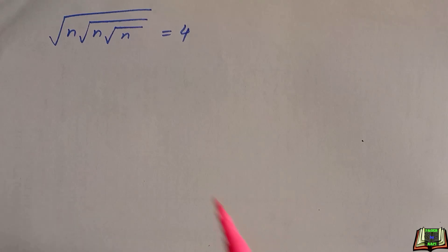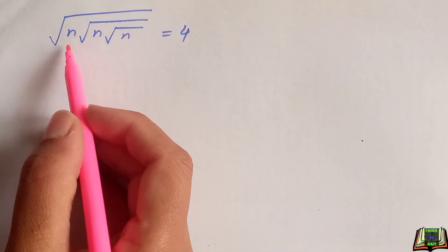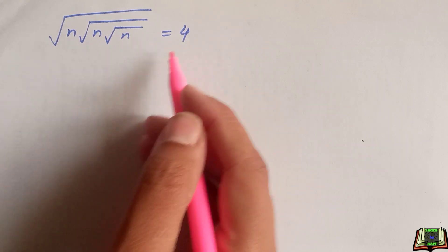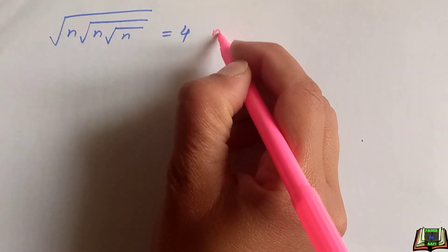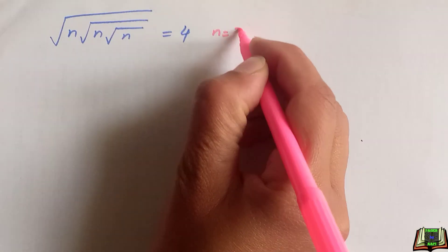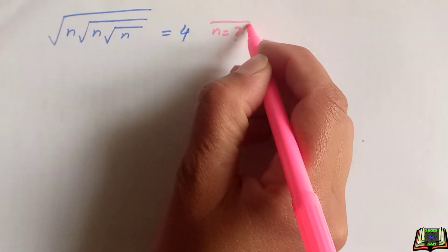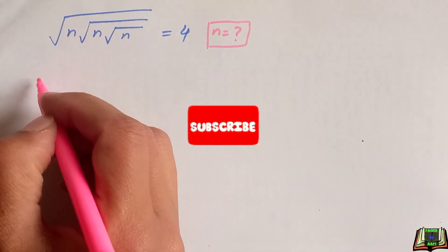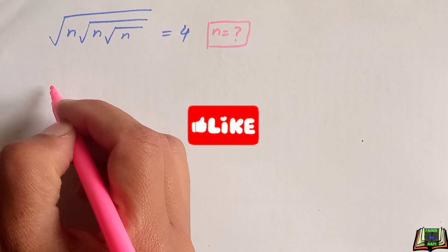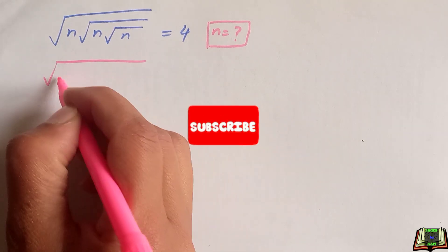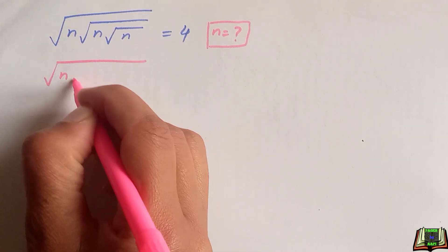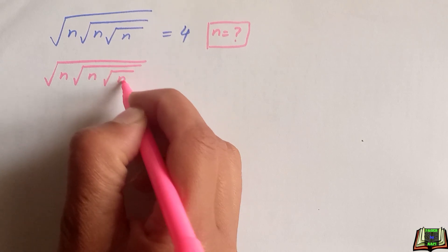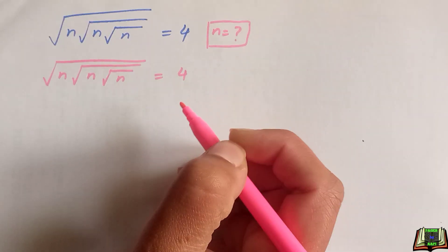Welcome all of you to a very nice radical problem. If square root of n times square root of n times square root of n is equal to 4, then how can we get the value of n? We have to find the value of n in this question. So let's get started.